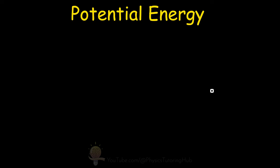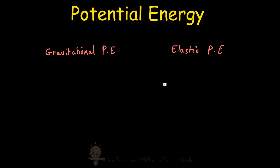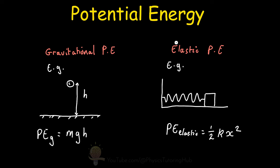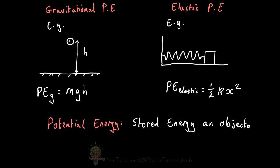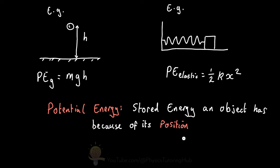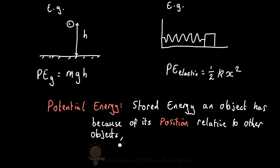There are two types of potential energy we're going to explore today in this video. The first will be gravitational potential energy, and the second is elastic potential energy. We could define potential energy as the stored energy an object has because of its position relative to other objects, its current shape, or its state.